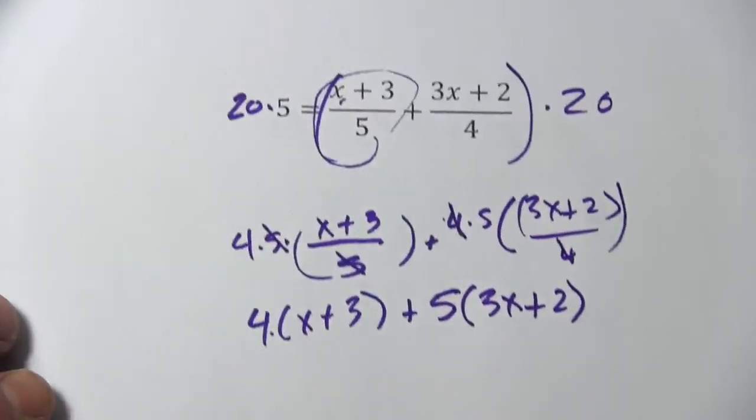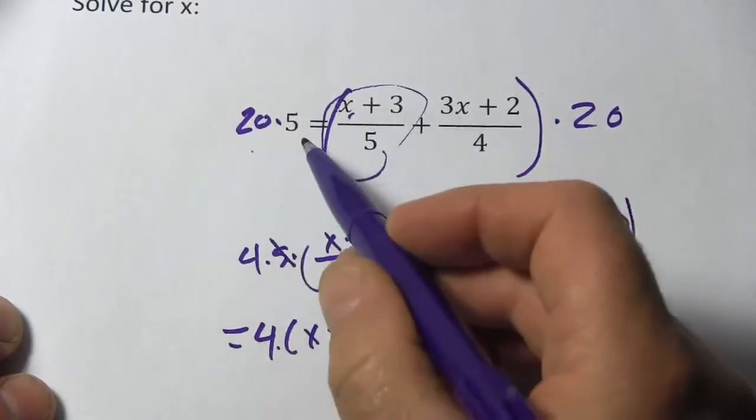All right, and remember, we go all the way back. On this side of the equation, we've got 20 times 5. That's 100.